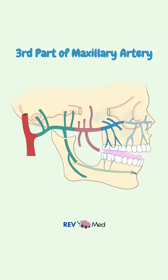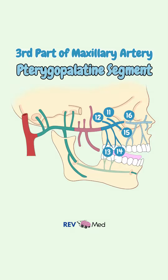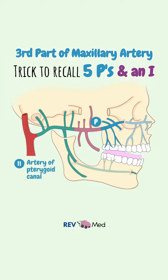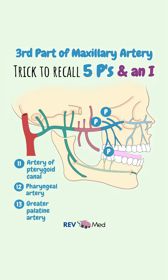Part three of the maxillary is the pterygoid palatine, which has six branches. We'll call it the five Ps and an I. The pterygoid canal, to pharynx and tympanic cavity. The pharyngeal artery, to the pharynx. The greater palatine, descending, to the hard and soft palate.